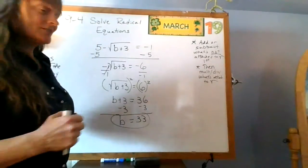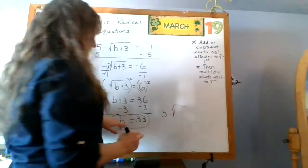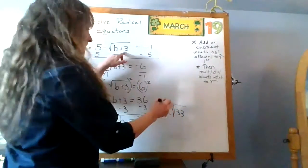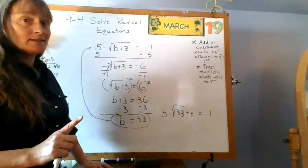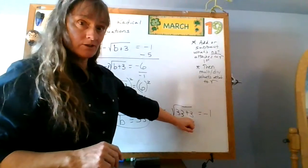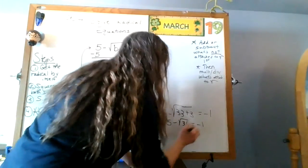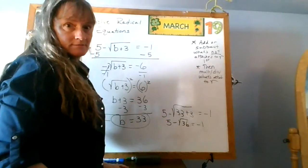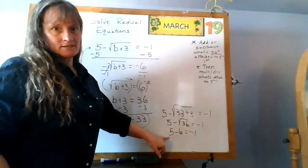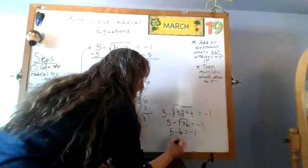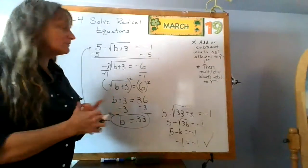Let's see — is this a good or bad solution? Substitute back in: five minus the square root of thirty-three plus three equals negative one. Thirty-three plus three is thirty-six, and I said if you don't get a perfect square you've done something wrong. So five minus the square root of thirty-six equals negative one — the square root of thirty-six is six. Five minus six: different signs, subtract — the answer is negative one. Negative one equals negative one — yes! b equals thirty-three works.